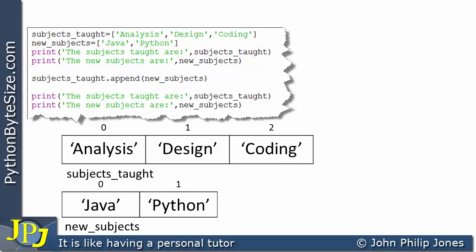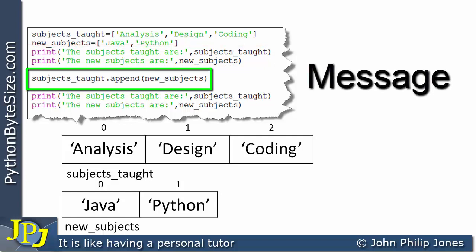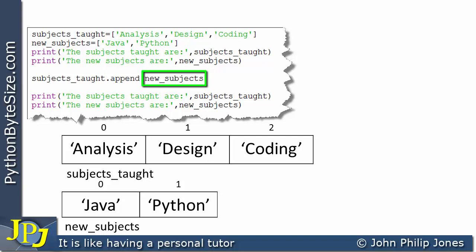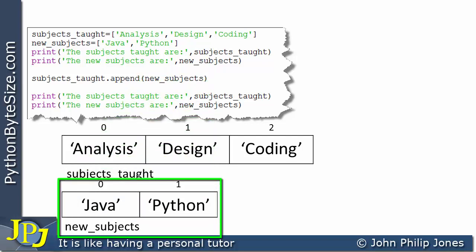What I'm now interested in is this line here — we have a message, and this message is going to be sent to the subjects_taught list, this instance of the list class. What's going to be invoked is the append method, and we're passing in as a parameter new_subjects, which is the list instance with two elements containing 'Java' and 'Python'.